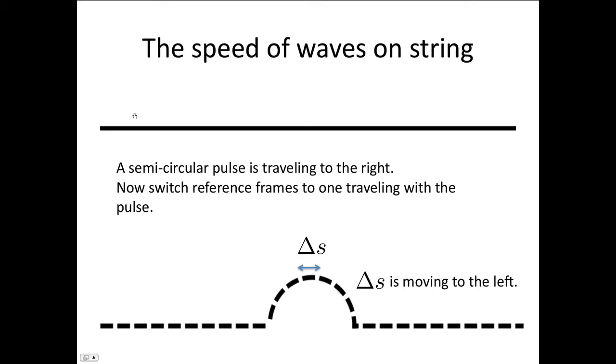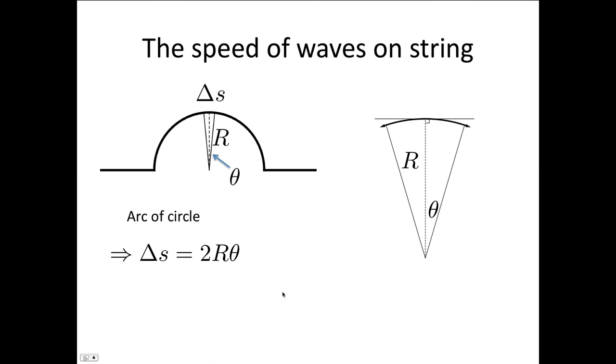We're now going to derive a formula for the speed of wave on a string. Here's the pulse that we're going to be considering as travelling from the left to the right along the screen here. Now imagine yourself in the reference frame of the pulse. So you're travelling along at the top of the pulse here. You're this increment delta s. What you see is increments of the rope going past you. They'll be travelling to the left.